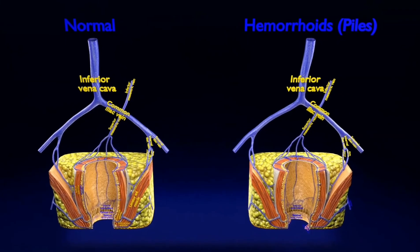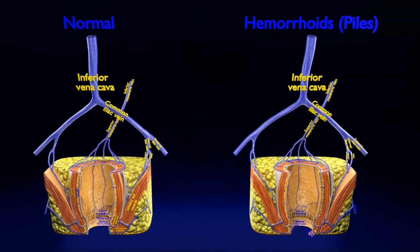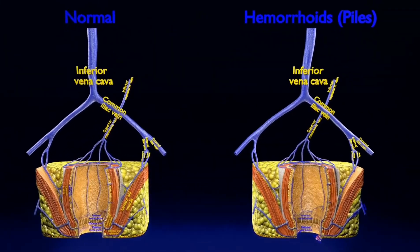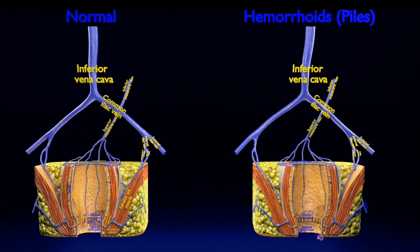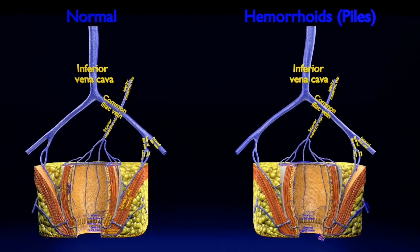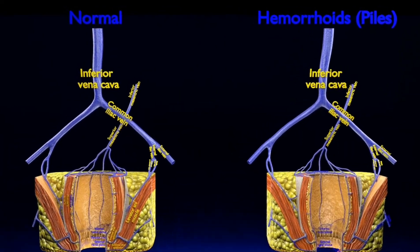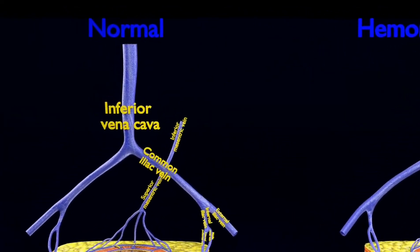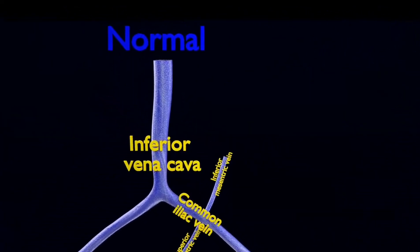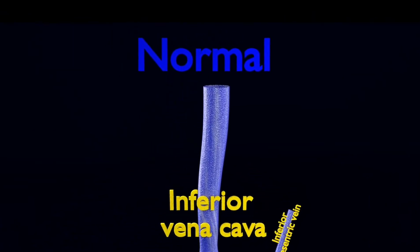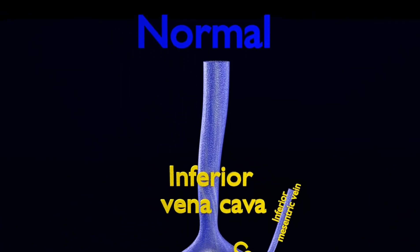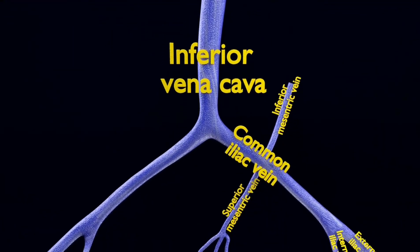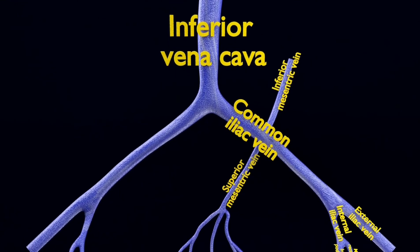Hemorrhoids, also called piles, are swollen veins in your anus and lower rectum, similar to varicose veins. Hemorrhoids can develop inside the rectum — internal hemorrhoids — or under the skin around the anus — external hemorrhoids.